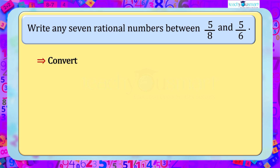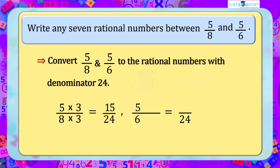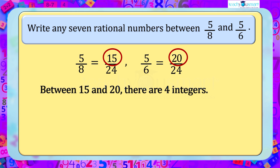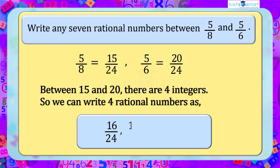Now we convert 5 by 8 and 5 by 6 to rational numbers with denominator 24. That is, 5 by 8 multiplied by 3 by 3 equals 15 by 24, and 5 by 6 multiplied by 4 by 4 equals 20 by 24. Between 15 and 20 there are 4 integers, so we can write 4 rational numbers: 16 by 24, 17 by 24, 18 by 24, and 19 by 24.